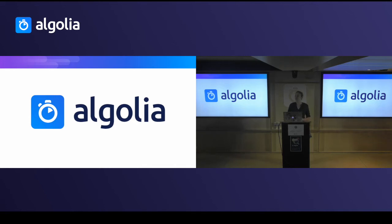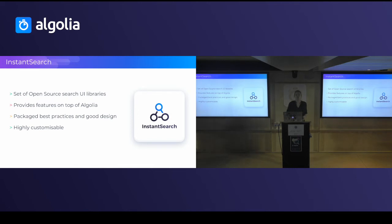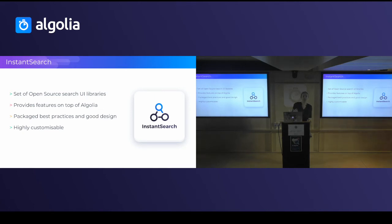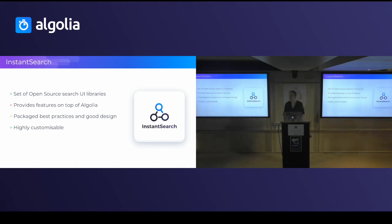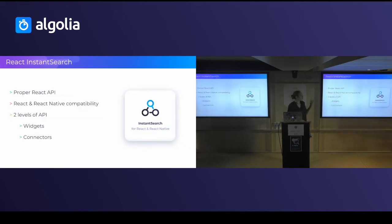The other part is the search UI. At Algolia we created what we call InstantSearch — a set of open-source search UI libraries. The goal is to provide features on top of Algolia: ready-to-use widgets that package best practices with good default design, but also a highly customizable library so you can implement search fast and go further when needed. We also have a React-specific version called React InstantSearch.